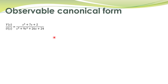The second important canonical form representation is observable canonical form. This form is useful when you are going to design an observer for a system.